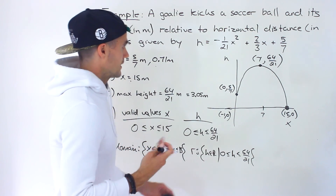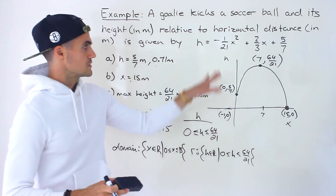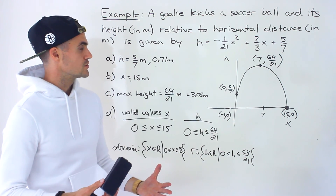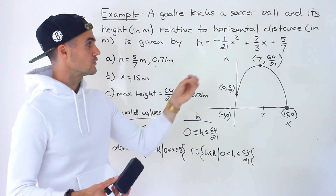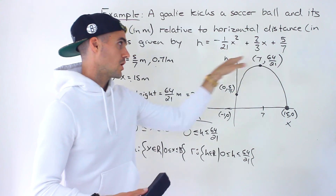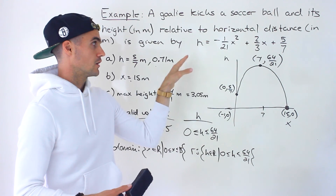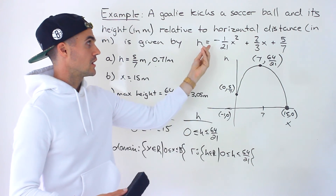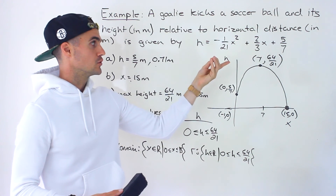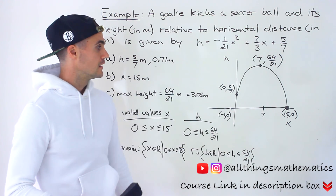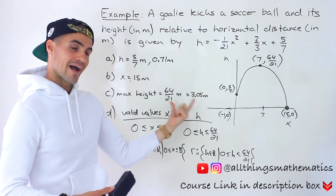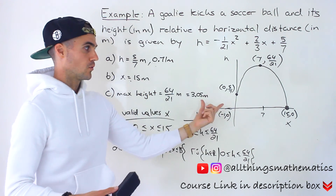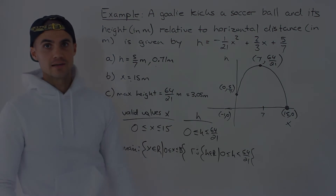Whichever way your teacher goes through these valid values, that's the way you write it. When dealing with fractions, find the lowest common denominator between all terms, convert everything to that denominator, then factor out that denominator and any common factors from the numerators — in this case just negative 1. The remaining bracket should give a quadratic with only integers, which you can then factor normally.